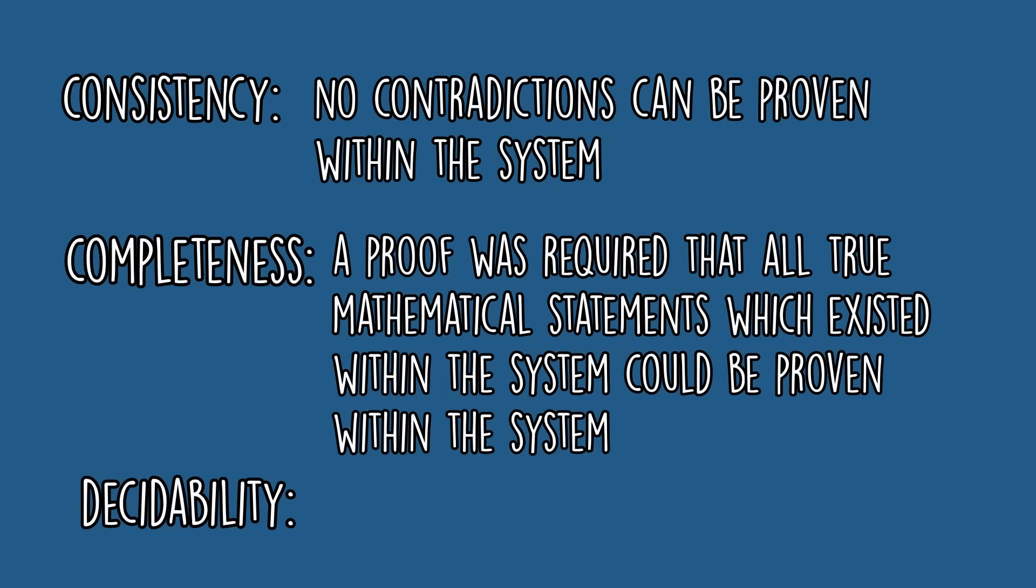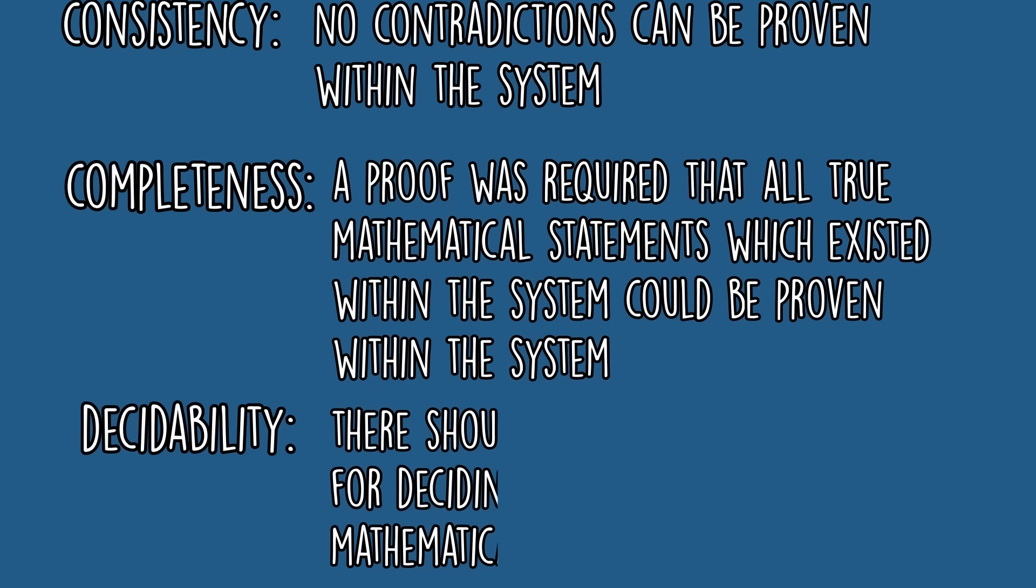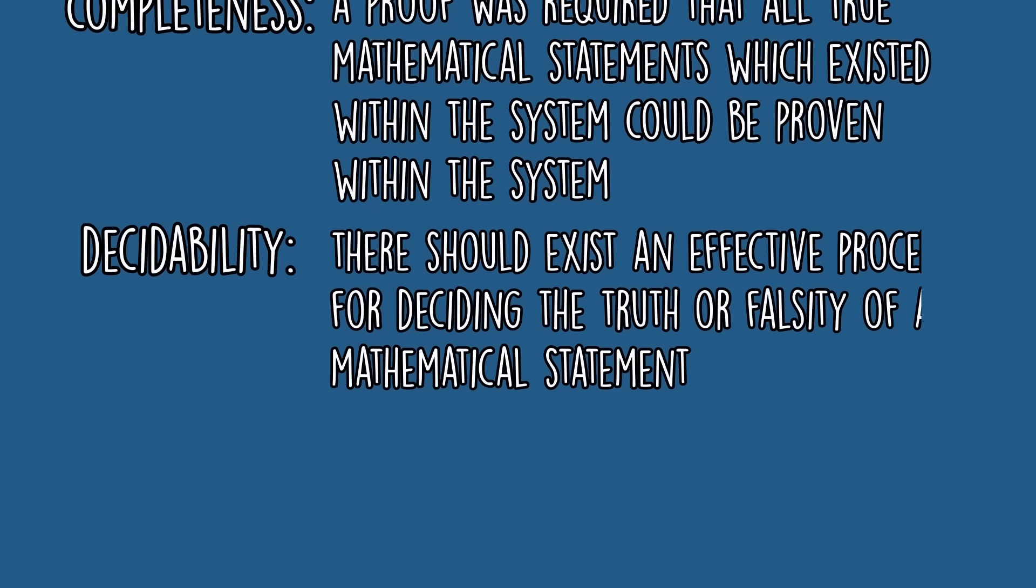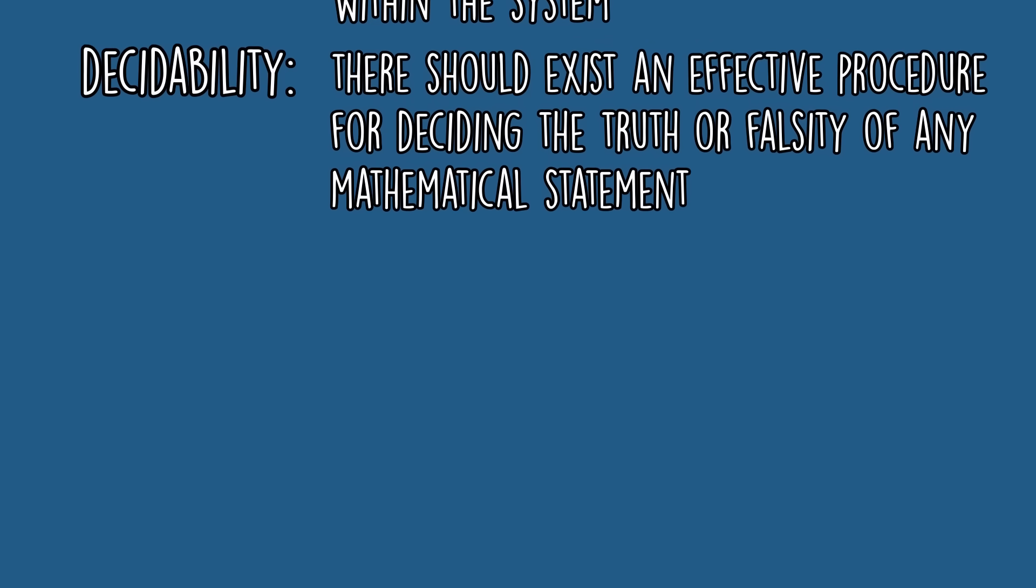And finally, decidability. This was the idea that there should exist an effective procedure for deciding the truth or falsity of any mathematical statement. For example, if given the statement p plus q equals z, there should be some effective procedure for deciding whether this statement is true within the system.